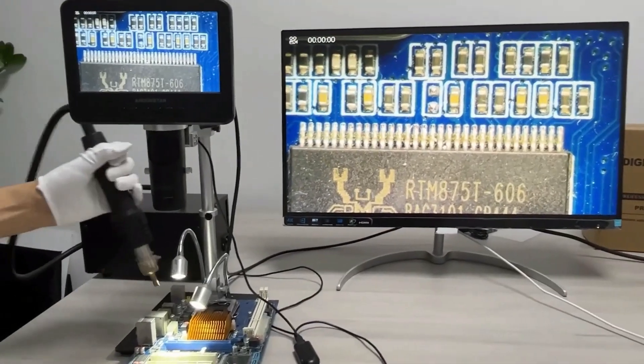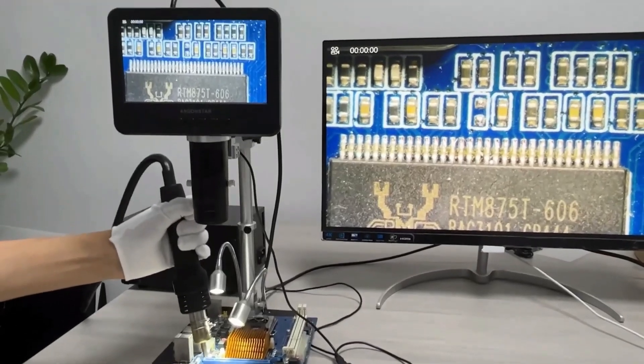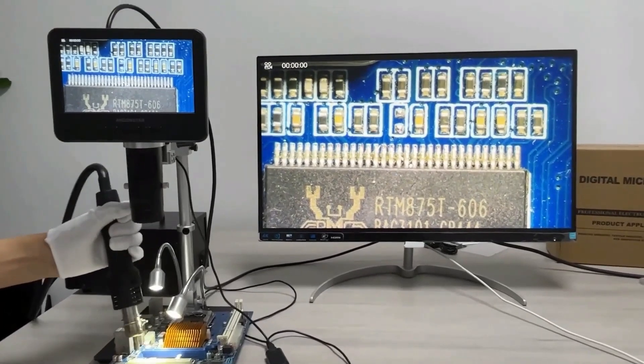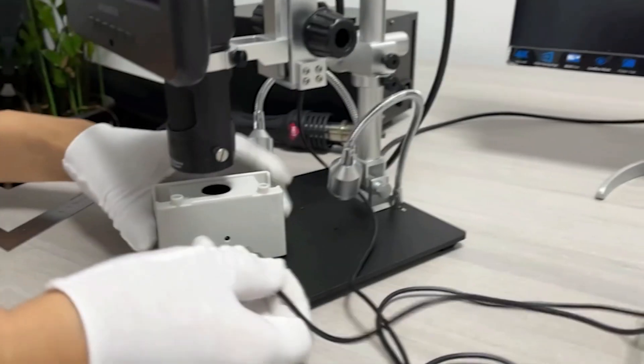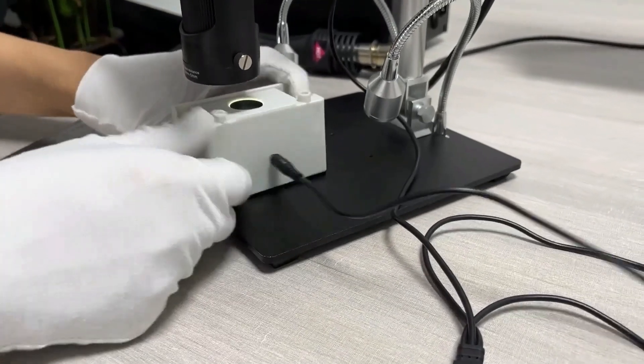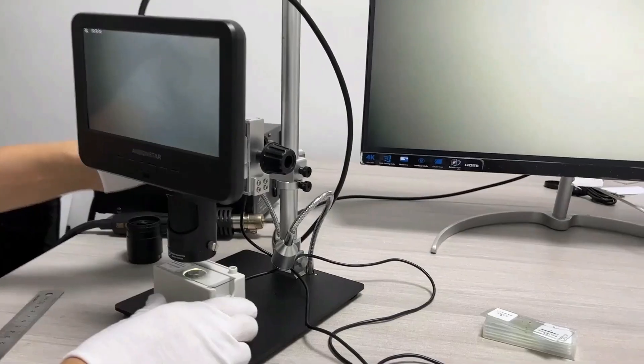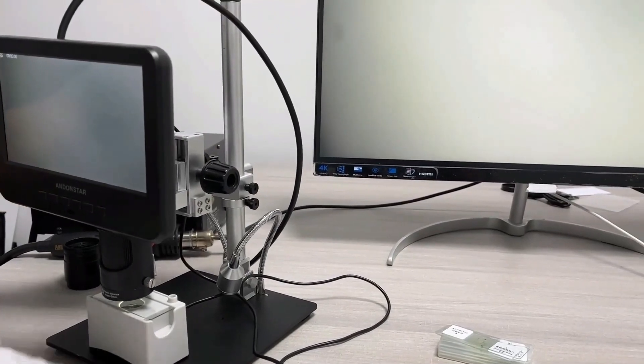Lens L is perfect for soldering and repairing circuit boards and mobile phones. Lens A allows you to observe whole coins, parts, plants, and stones, while Lens D is designed for examining biological slides. With this setup, you'll have the tools you need to dive deep into your hobbies or projects.